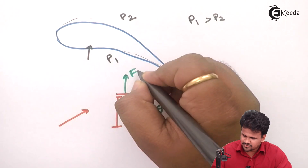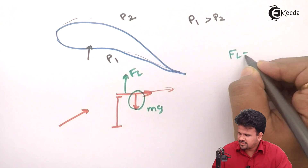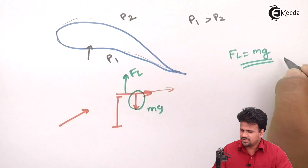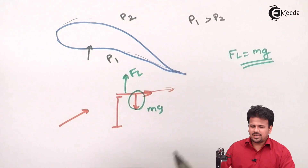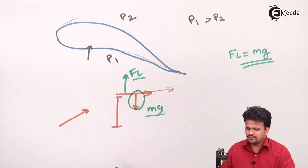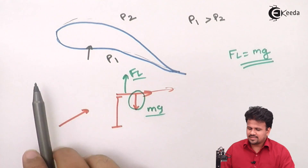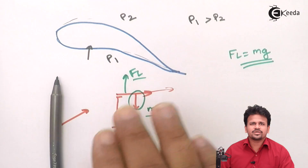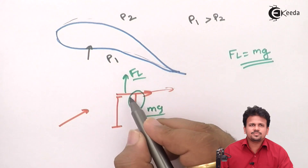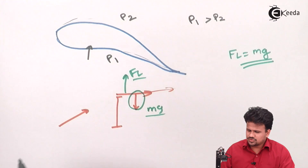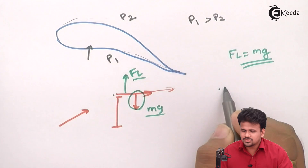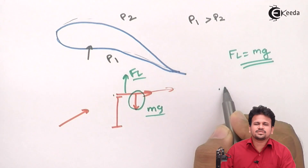Just opposite to the weight, there will be the lift force. If the lift force of the aircraft becomes equal to the weight of the aircraft, then there is a stalling of an aircraft. That means the aircraft remains in a horizontal position, and whatever fuel is burnt is used to take the aircraft from one point to another point in the horizontal direction.